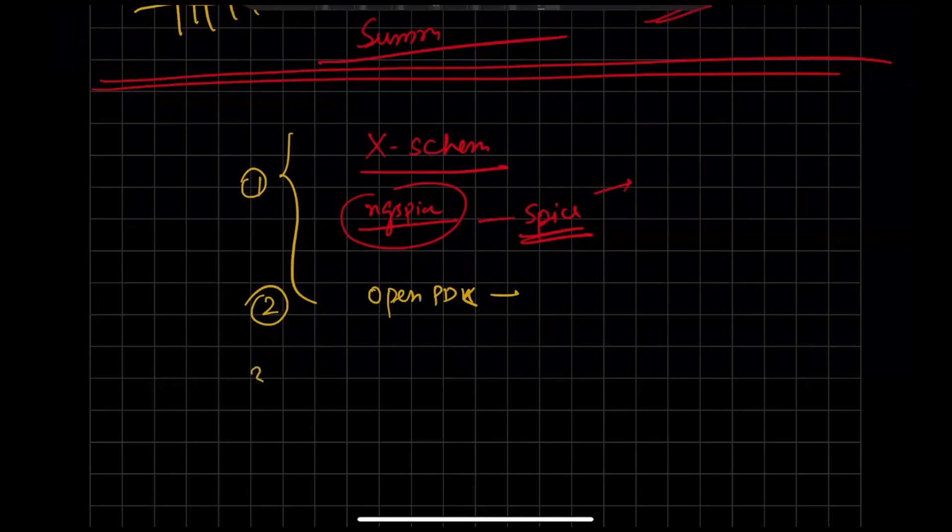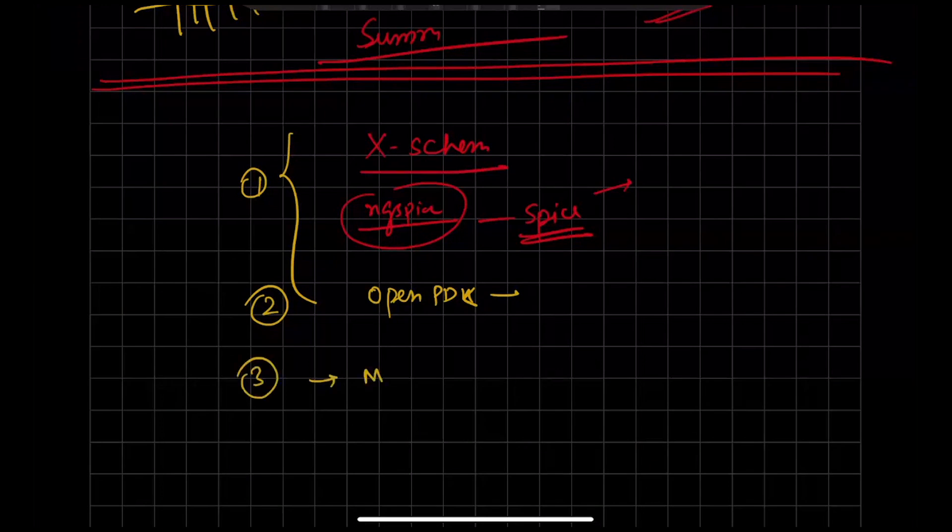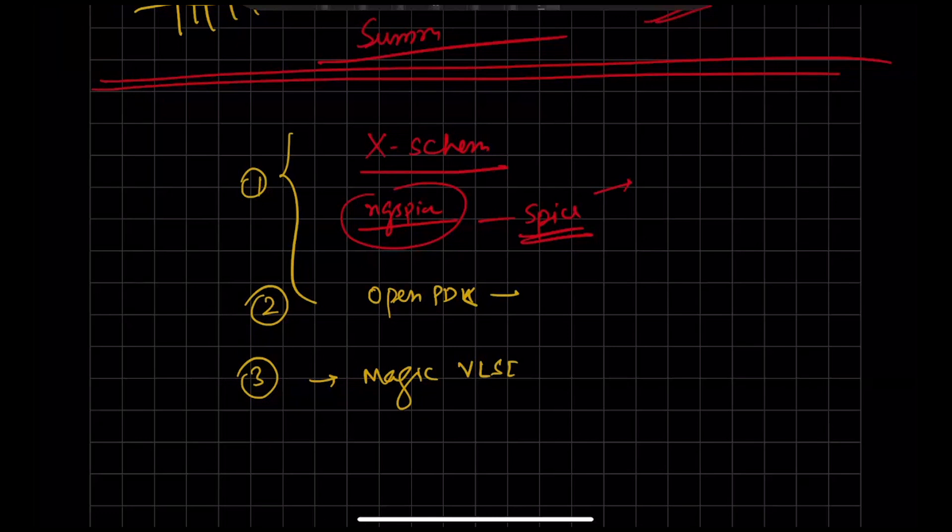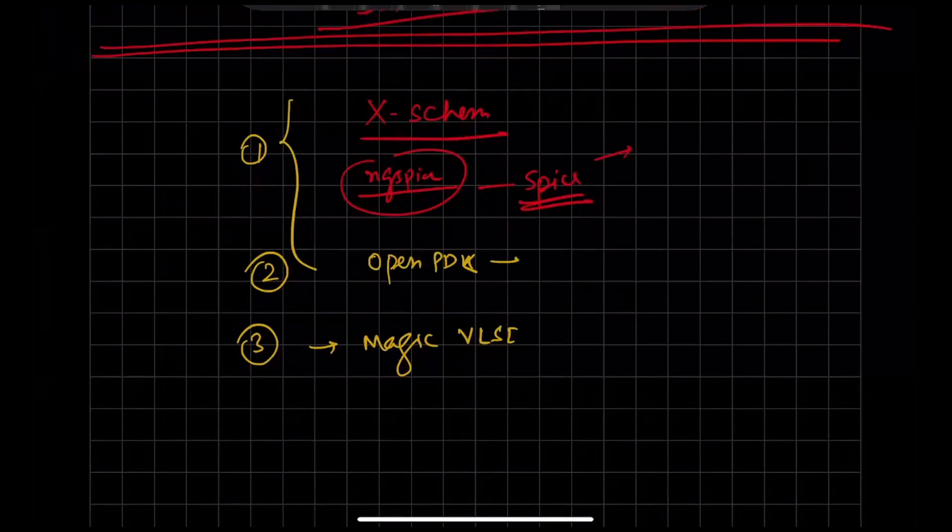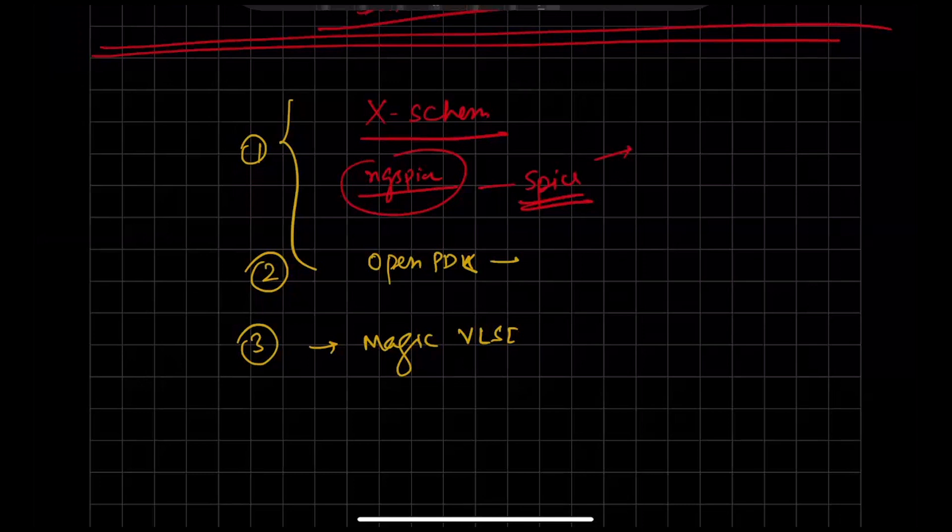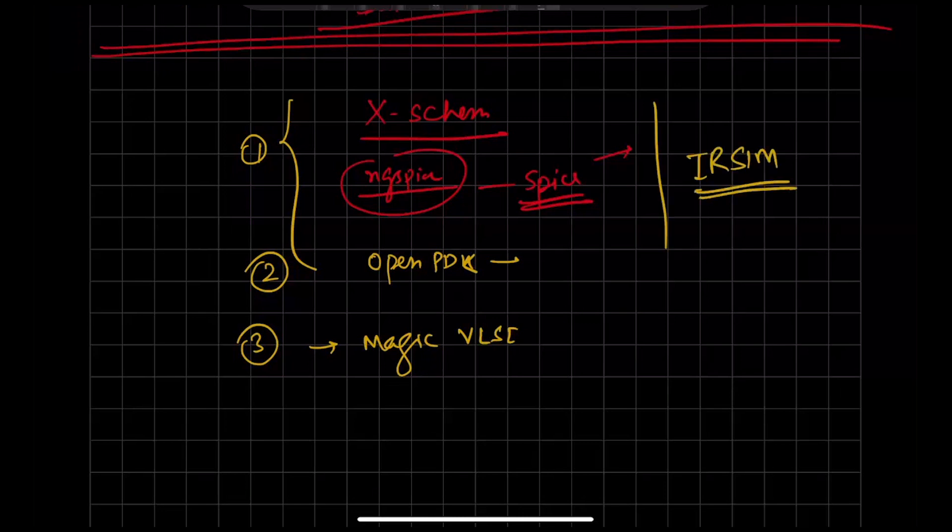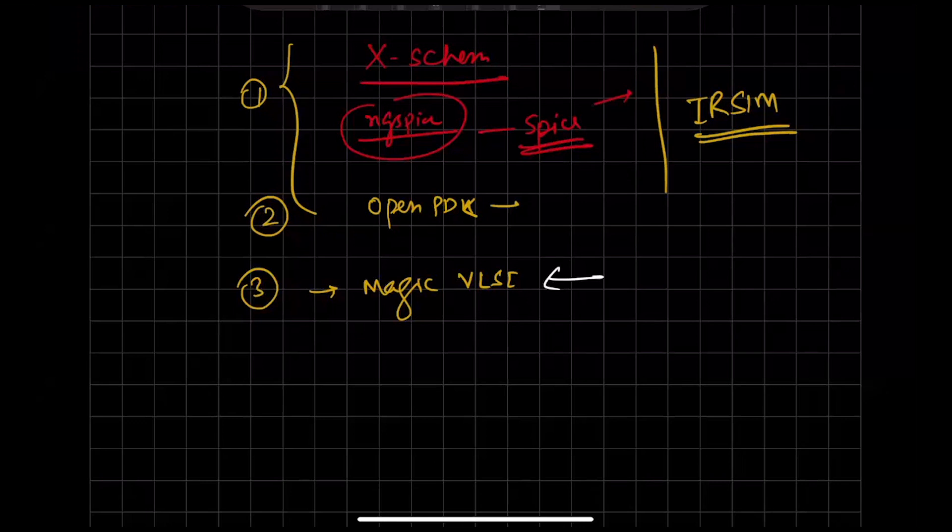And for layout design, you can use magic. Magic VLSI layout design. Many people are using it while designing with open source. And there's one more thing. Some people work in digital domain also. So, what about them? We can use IRC. And even better tools are also available. So, IRC is one example. Where you can directly design with the gate level. Magic, you can do DRC in itself.